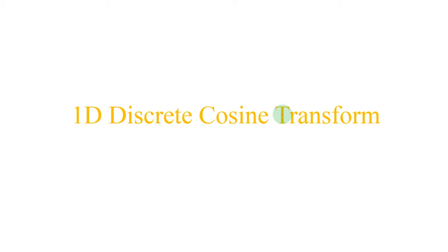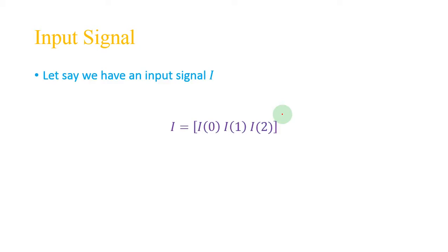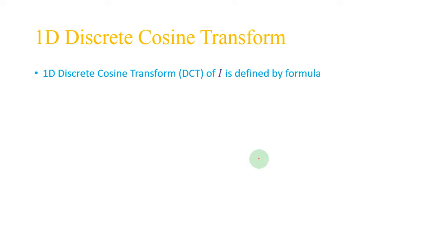Welcome back. In this video we shall talk about the Discrete Cosine Transform, or 1D Discrete Cosine Transform — 1D stands for one dimensional. Let's say we have an input signal I given as I = [I(0), I(1), I(2)], where 0, 1, and 2 are the locations of the signal — this is position zero, this is the first position, and this is the second position.